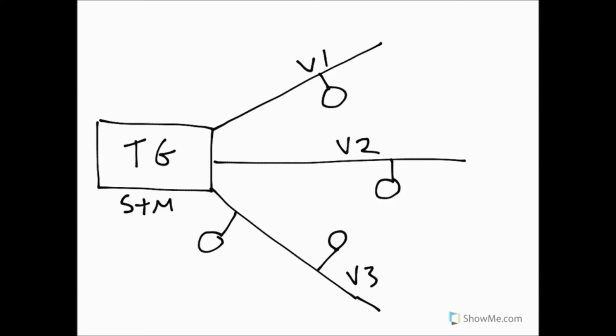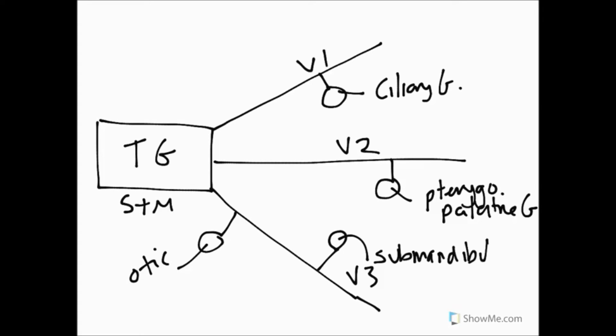So we can label these and say the one that's associated with ophthalmic, which is V1, is called the ciliary ganglion. There's one associated with maxillary, which is V2, and that's called the pterygopalatine ganglion. And there's two associated with V3. One is called the otic ganglion, and the other is called the submandibular ganglion. So we've got these four ganglia, all anatomically attached to divisions of the trigeminal nerve.